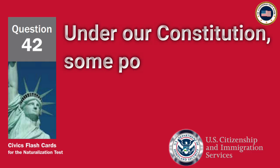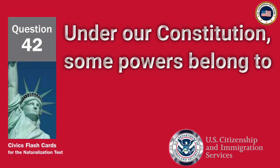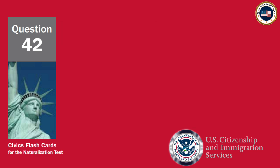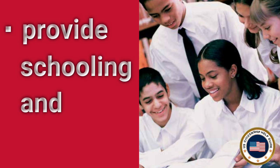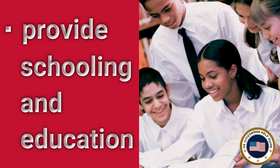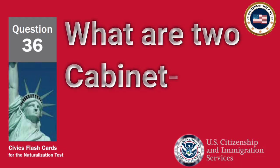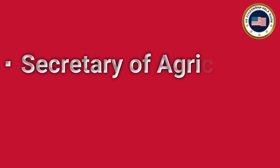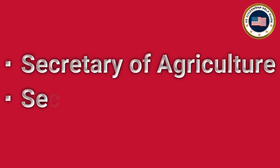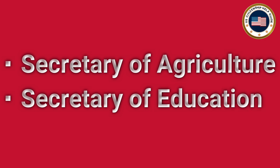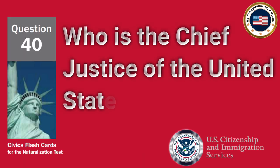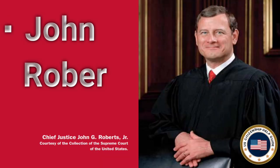Under our Constitution, some powers belong to the states. What is one power of the states? Provide schooling and education. What are two cabinet-level positions? Secretary of Agriculture. Who is the Chief Justice of the United States now? John Roberts.